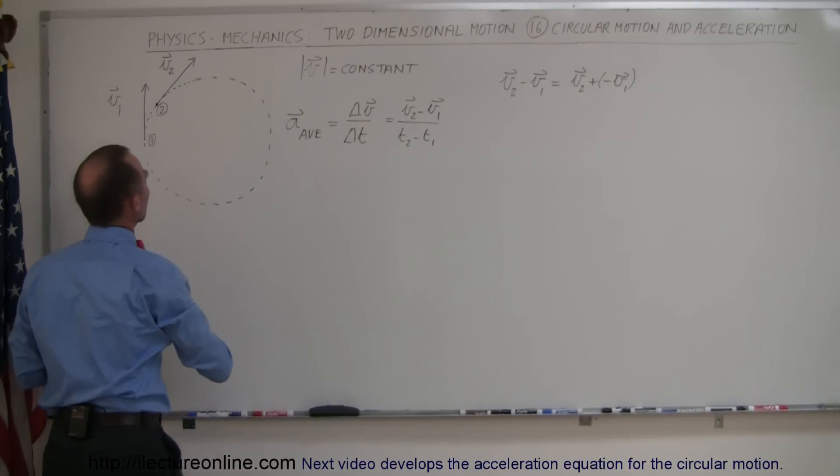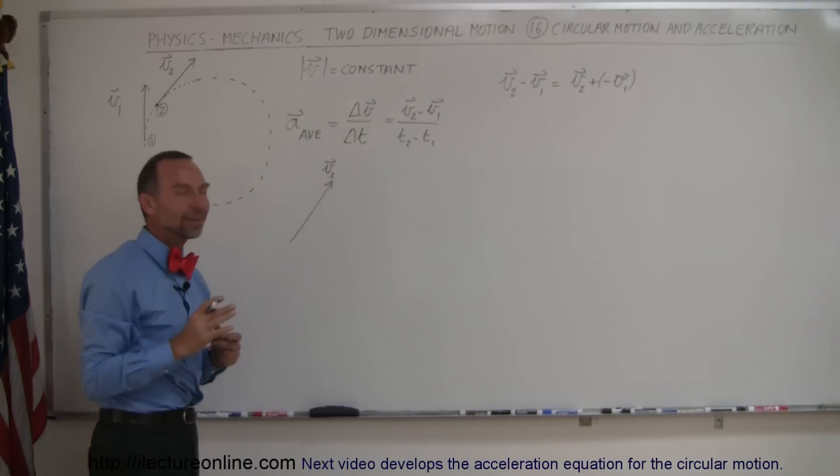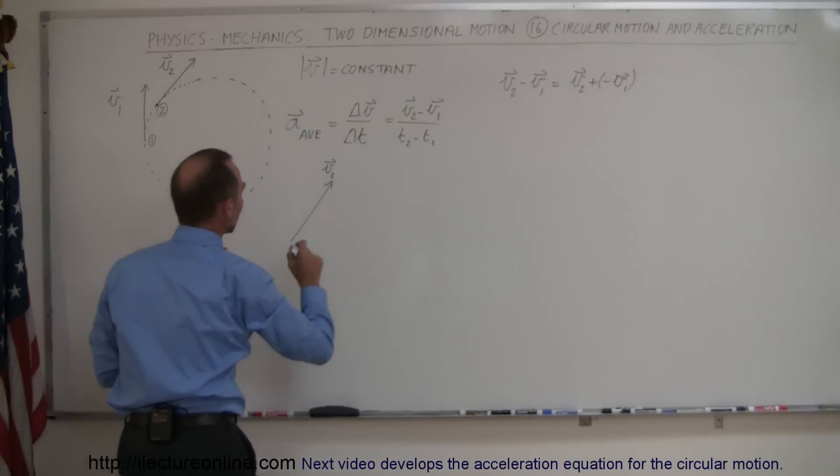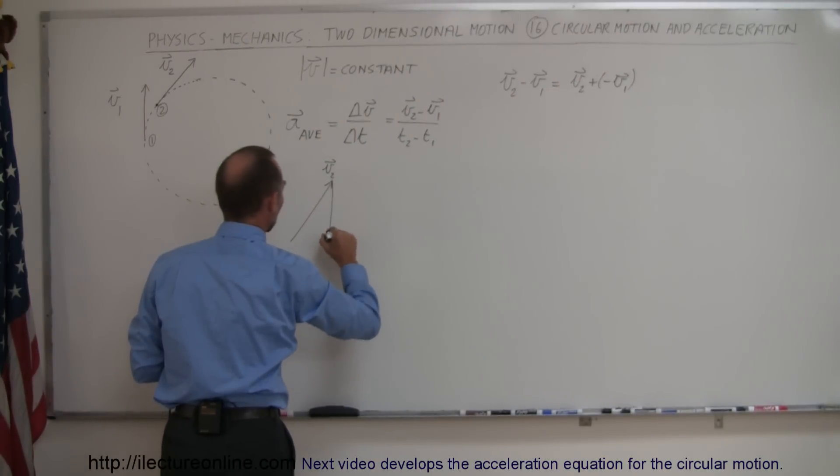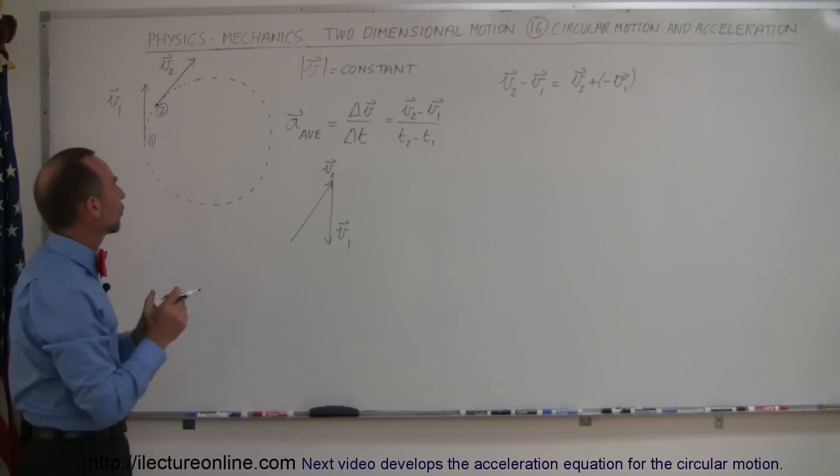So here we have v2 and v2 looks like this. This is our v2 vector. Now we're going to add to that the negative of v1. Since v1 points directly upward, we're going to turn that around and have it point directly downward. So there is v1.